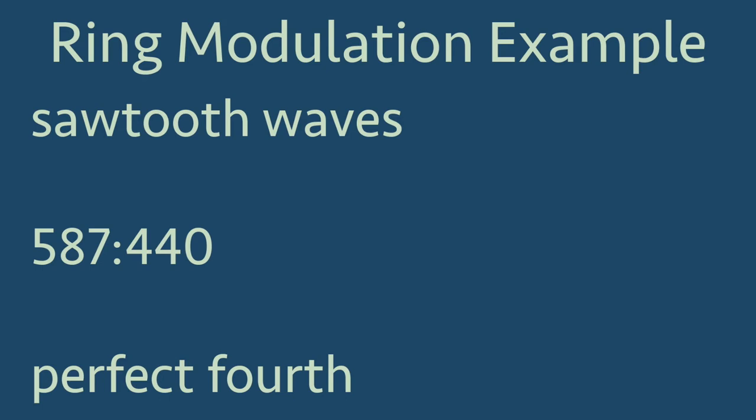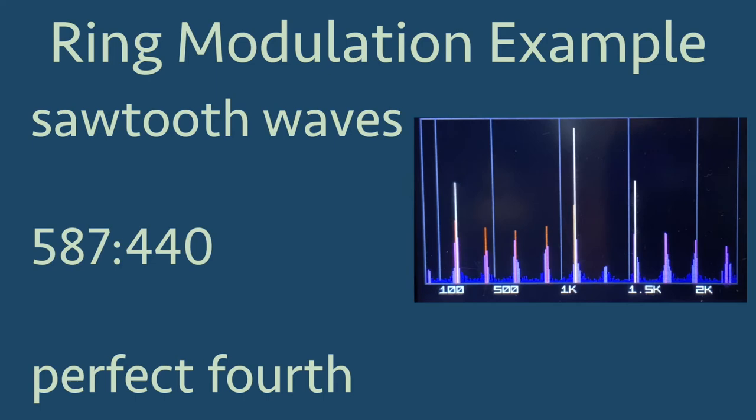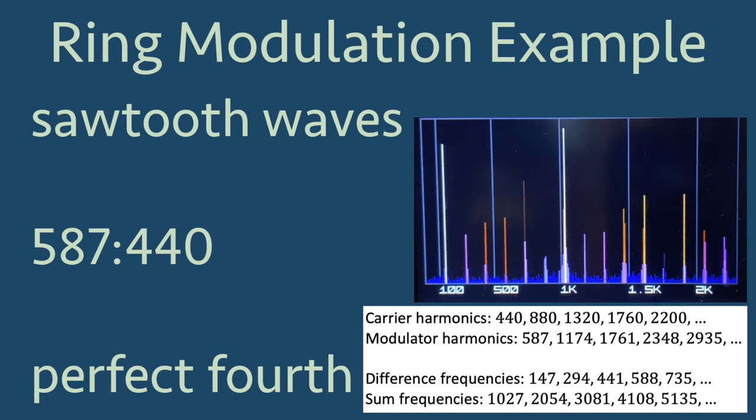Second, the carrier and modulator are now both sawtooth waves that are harmonically related. So I've set the carrier to 440 Hz and the modulator to 587 Hz. The harmonic interval is a perfect fourth. But when we look at all of the harmonics for the carrier and the modulator, the sum and difference frequencies will lead to some in-harmonic sounds.